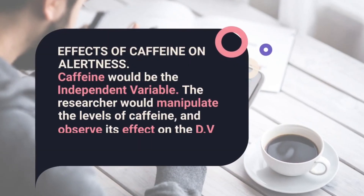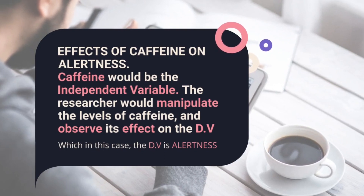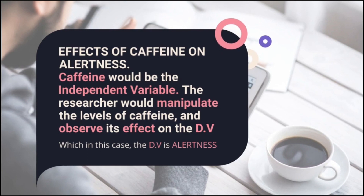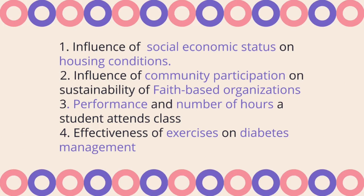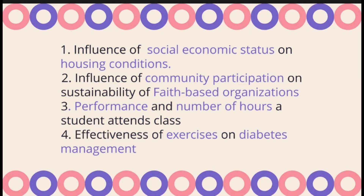For example, if a researcher is studying the effects of caffeine on alertness, caffeine would be the independent variable. The researcher will then manipulate the levels of caffeine, such as giving participants different doses, and observe the effect on the dependent variable — which in this case would be alertness. So the independent variable is the cause, while the dependent variable is the effect. For example, in the topic 'influence of social economic status on housing conditions,' housing conditions depend on social economic status. So housing conditions is the dependent variable, and social economic status is the independent variable.